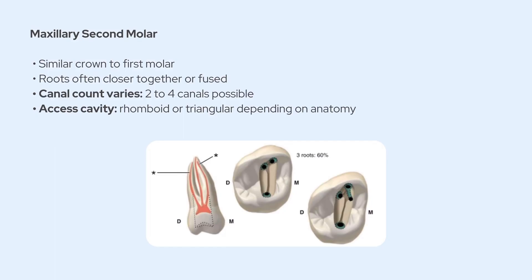Moving to the maxillary second molar, it's quite similar to the first molar coronally, but its roots are often closer together and may even be fused. The canal anatomy can vary a lot — sometimes you'll only find two or three canals instead of four — and access should still follow a rhomboid or triangular shape depending on what you find clinically.